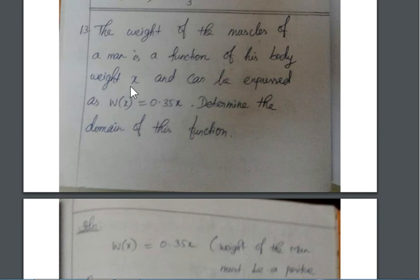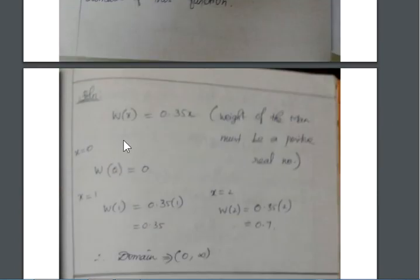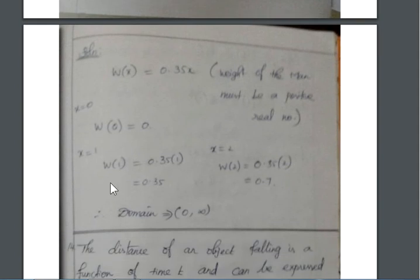Question number 13. The weight of the muscles of a man is a function of his body weight x. Now, that is body weight. And can be expressed as w(x) is equal to 0.35x. Determine the domain of this function. Here, we want to calculate the domain. w(x) is equal to 0.35x is given. Weight of the man must be positive. That is no negative. Weight in negative will be meaningless. So, we take the values 0, 1, 2, 3 and apply it on the law. So, therefore, the domain must be 0 to infinity.